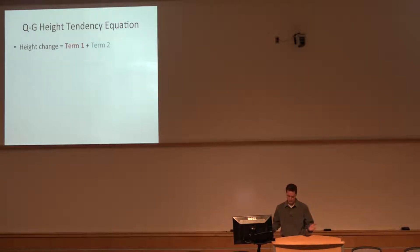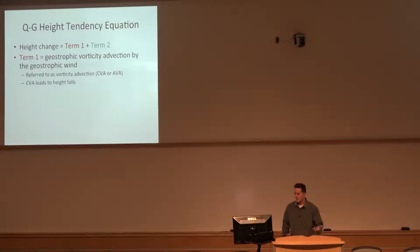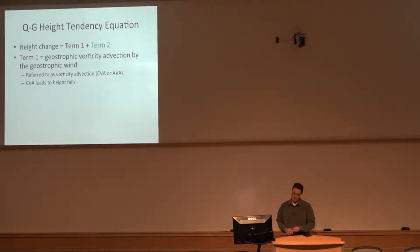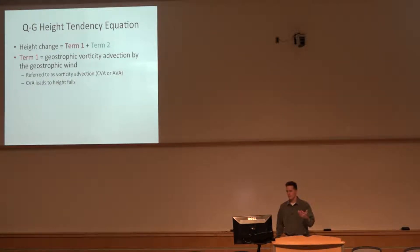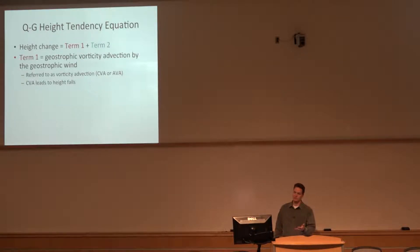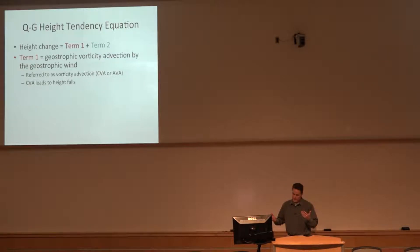Once we make all of our assumptions and simplifications, the nasty version of term one is geostrophic advection of vorticity by the geostrophic wind. We should know that the wind is not perfectly geostrophic in the real atmosphere, so it's a pretty good first-order approximation though.